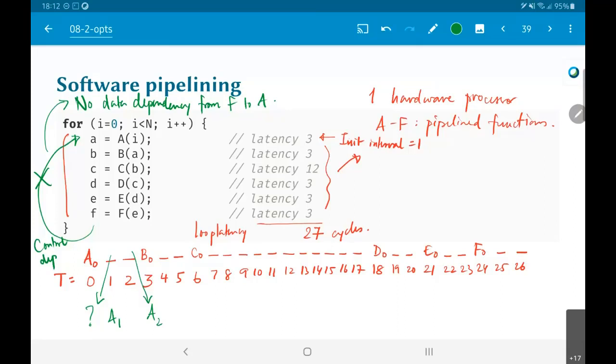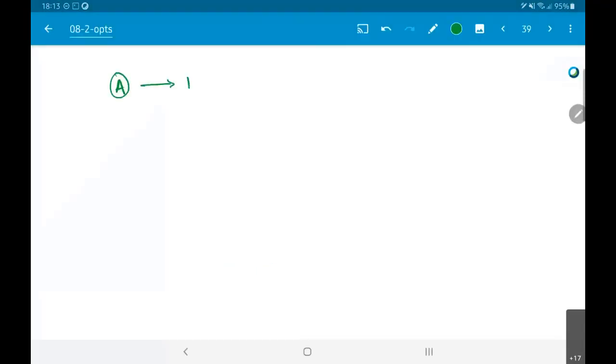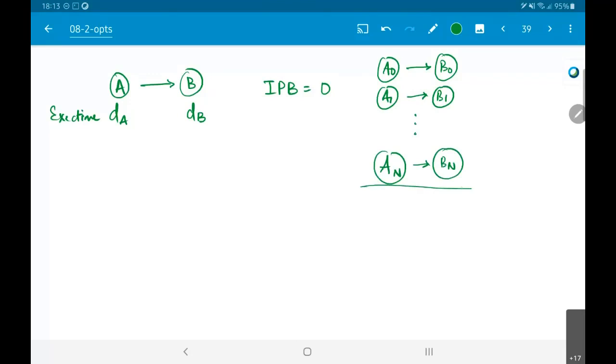Is the assumption that A, B up to F has 0 computational delays? No. I mean I have told you that they have latencies of 3 clock cycles and so on. But what I am, so when I say that the iteration period bound is equal to 0, that is as N tends to infinity, what is the average time per iteration? If I had something like A to B, this has some execution time DA, this has some time DB, but the iteration period bound is equal to 0 because I can essentially do A0 followed by B0, A1 followed by B1, etc. AN followed by BN.